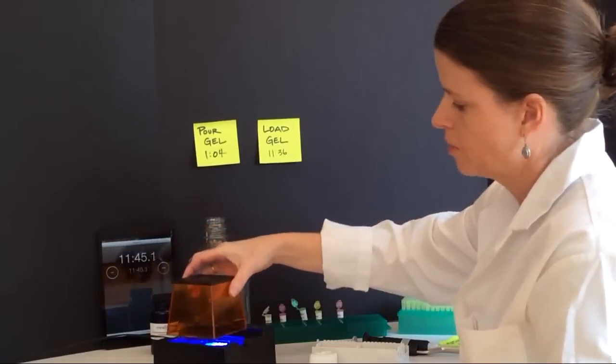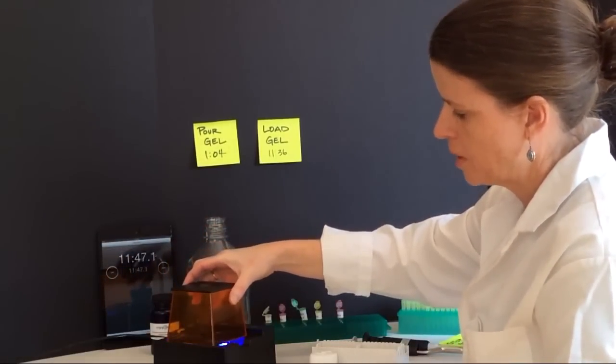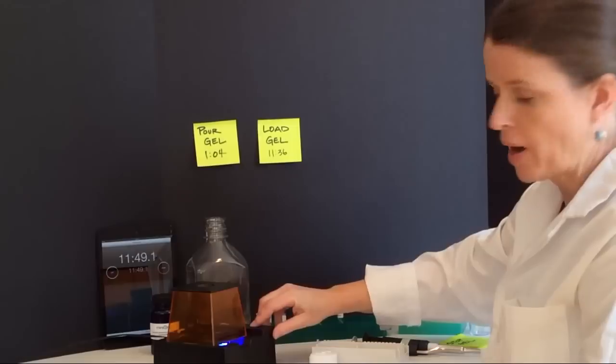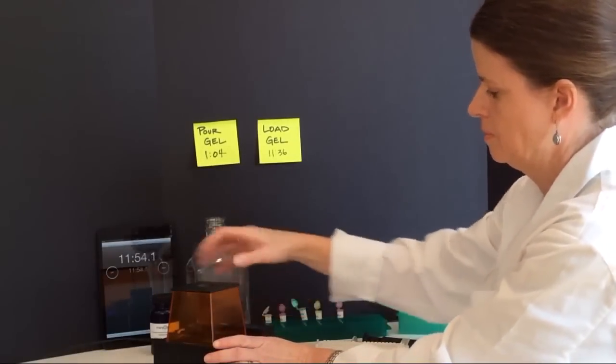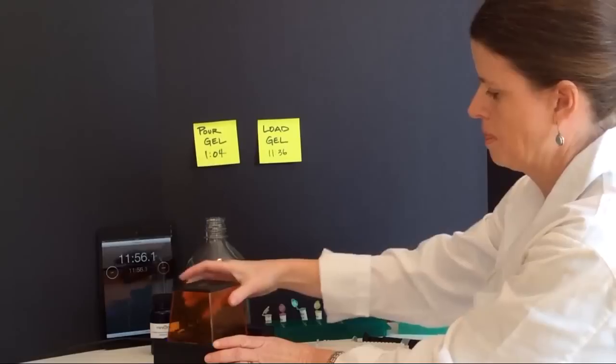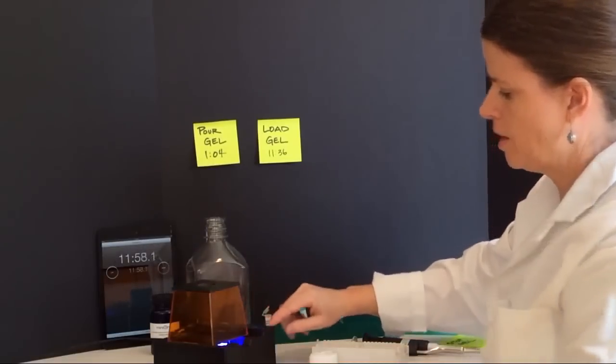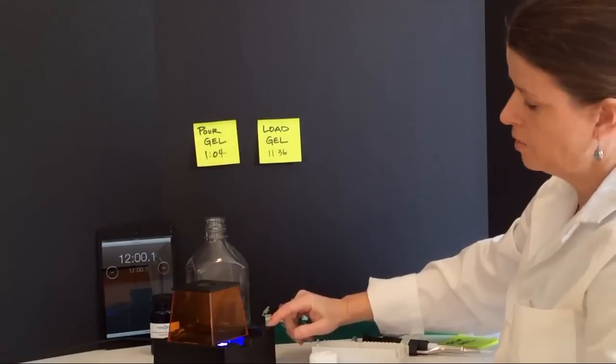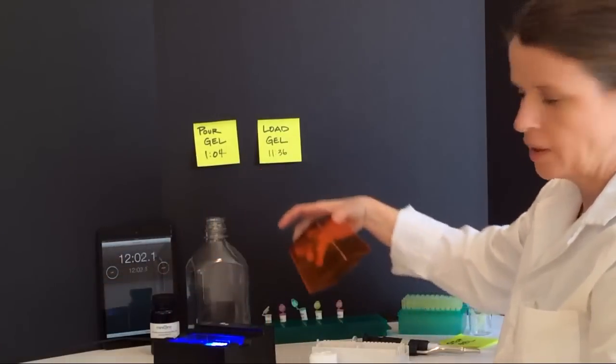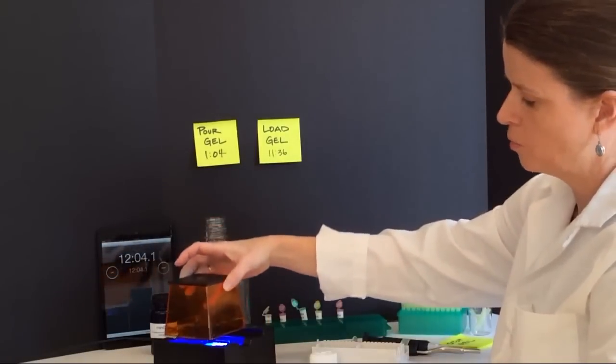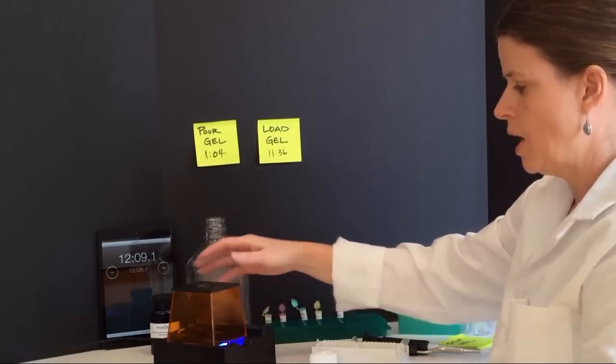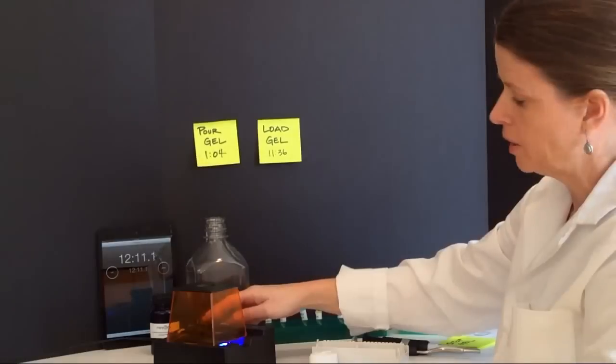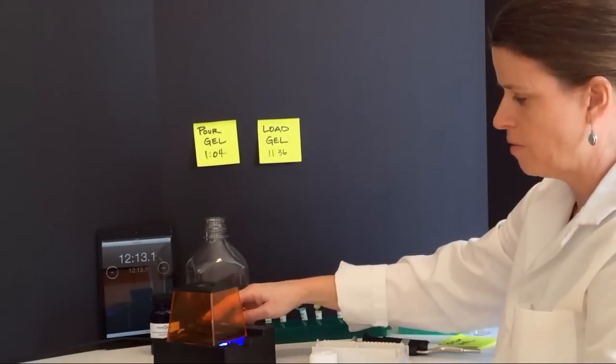At this point, I'm ready to start running my gel. I'm going to place the top on my gel box and press the power button. Once I've done that, I'll see a green light come on. You'll notice that if I remove my top, the green light will go off because my power will no longer be running. So this is another nice safety feature.